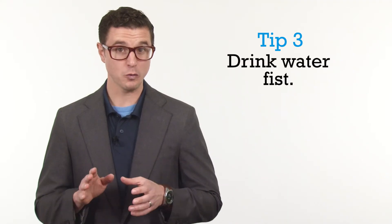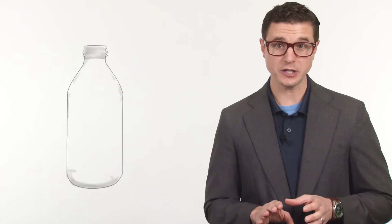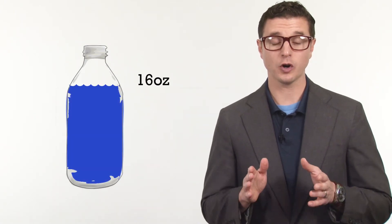Tip three, drink water first. Just before each meal, drink 16 ounces of water. It'll curb your appetite. Next, replace all sugar-filled soda and juices with water or tea. If plain water isn't your thing, consider using a fruit infuser or adding a non-sugar flavoring mix.